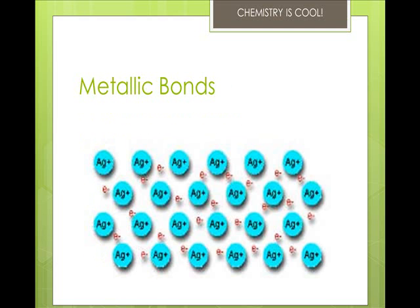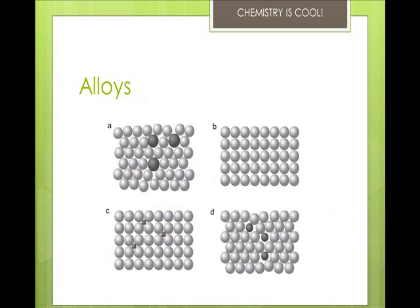Metallic bonds are how atoms are held together in a solid. Metals will hold onto their valence electrons extremely weakly. Think of them as positive ions floating around in a sea of electrons. Electrons are free to move through the solid, and metals therefore conduct electricity.